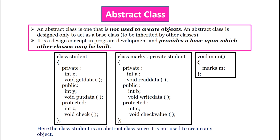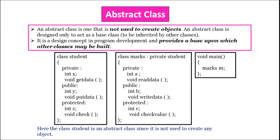An abstract class is the one that is not used to create objects. An abstract class is designed only to act as a base class which can be inherited by other classes. It is a design concept in program development and provides a base upon which other classes may be built. For example, if marks is a child class inheriting base class student privately, and in main we create an object M of class marks but not of class student, then class student here acts as an abstract class because it is not used to create any object.